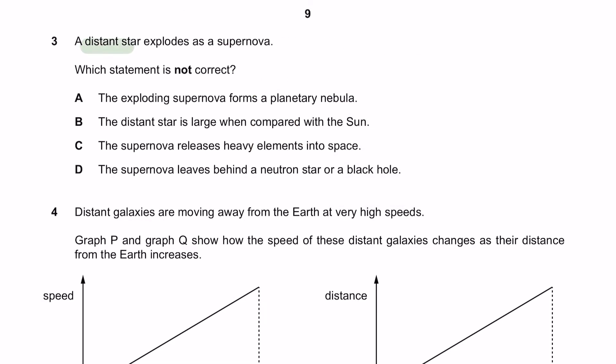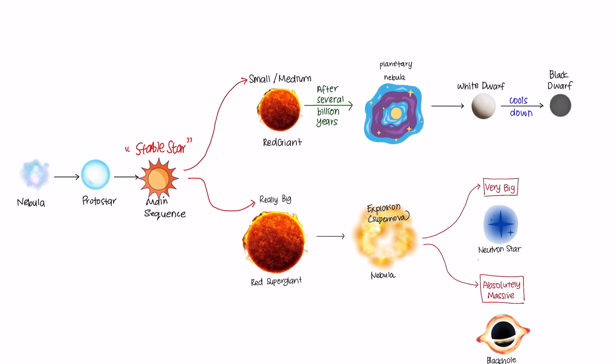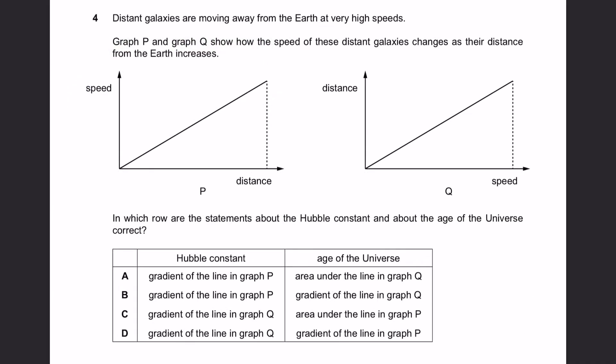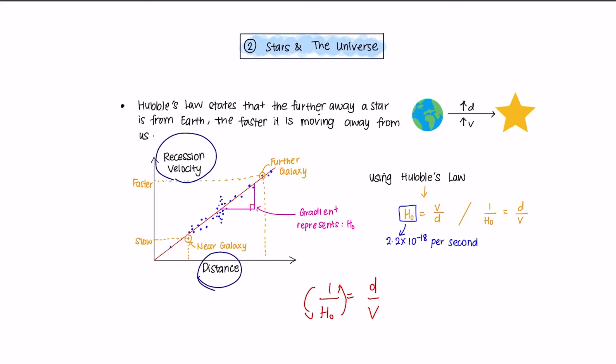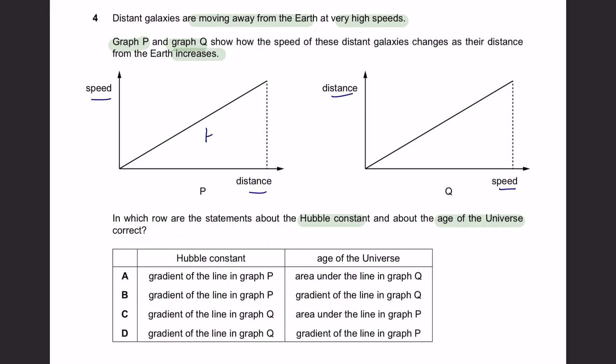Question 3. A distant star explodes as a supernova. Which statement is not correct? The exploding supernova forms a planetary nebula - that is incorrect because a red giant is what forms a planetary nebula. So the answer is A. Question 4. Distant galaxies are moving away from the Earth. Graph B and Graph Q show how the speed changes as their distance from the Earth increases. A speed vs distance graph will give us Hubble constant as the gradient, and when reversed, 1 over H0 gives us the age of the universe. So the answer here is B.